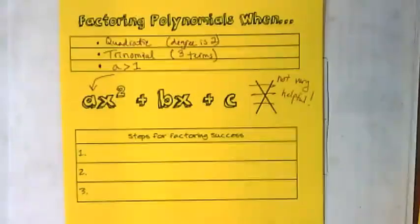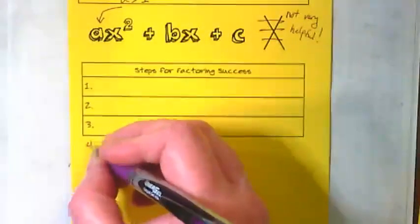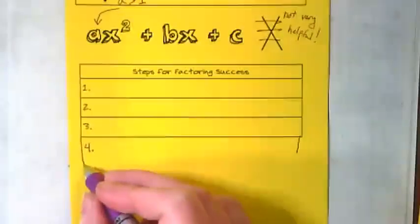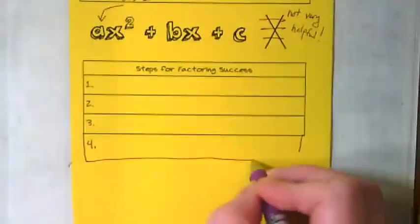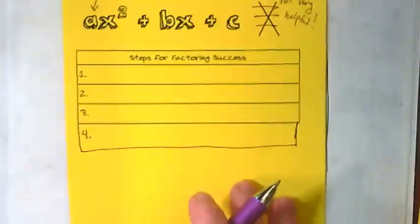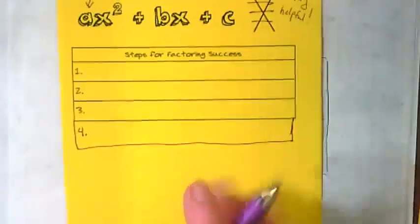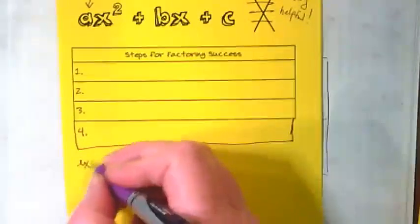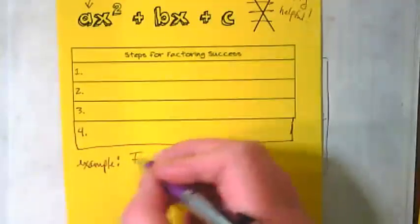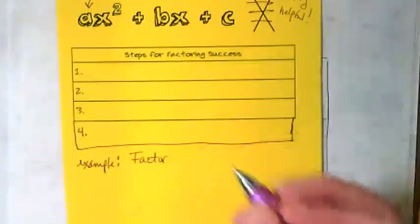After I printed these, I realized I wished I'd had a fourth spot for a step. So if you could add another box to the bottom of your notes here. And then we are going to factor this example as we talk through these steps.